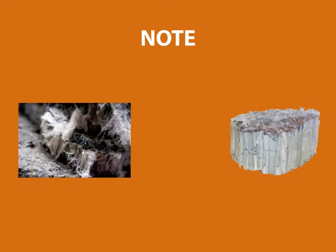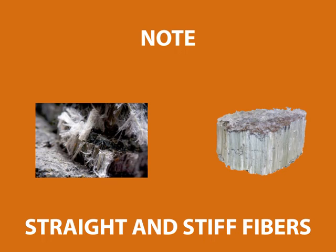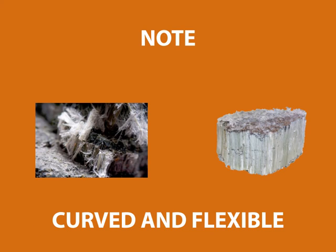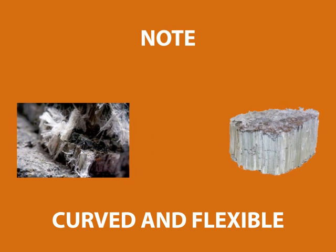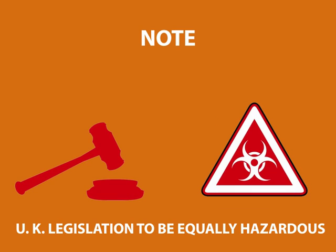Note: all of these types are dangerous, but blue and brown are more hazardous than white because of the fibre properties. This is because straight and stiff fibres are more easily inhaled than curved and flexible, or white, fibres. However, all asbestos types are deemed by UK legislation to be equally hazardous, therefore classified using the same control limit.